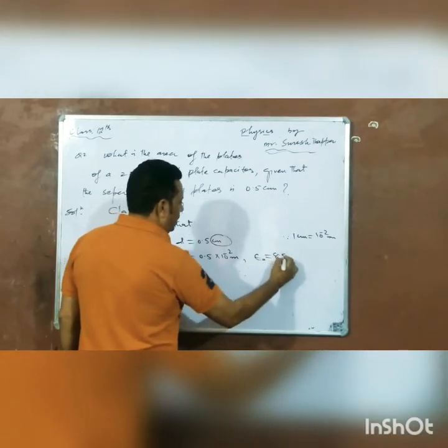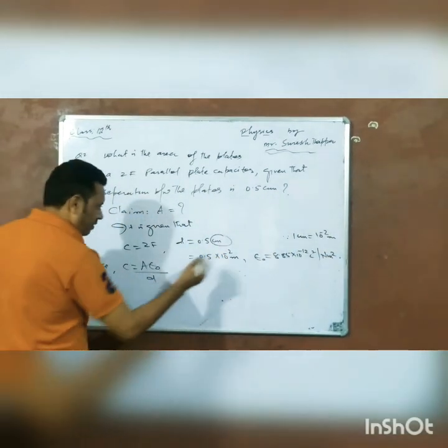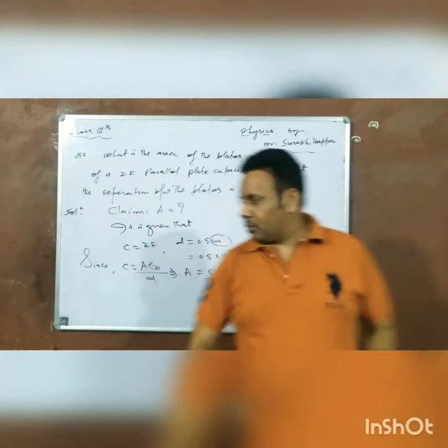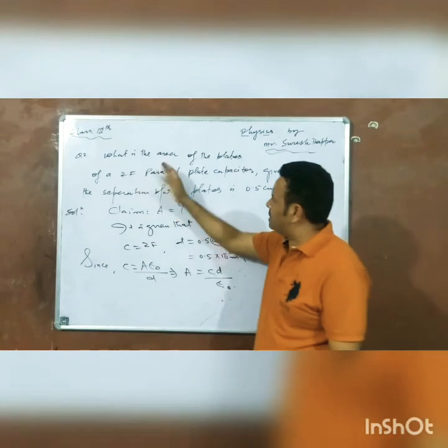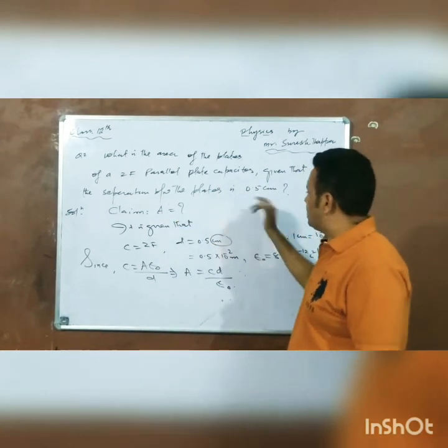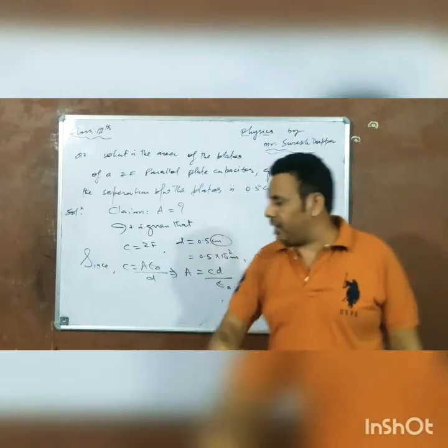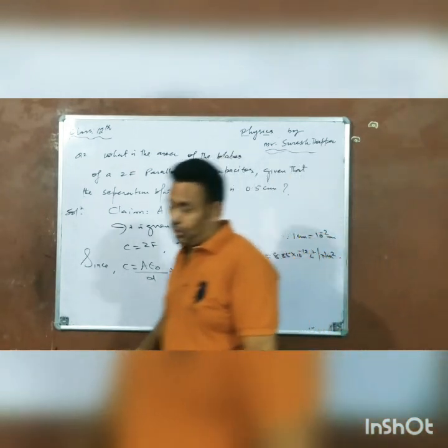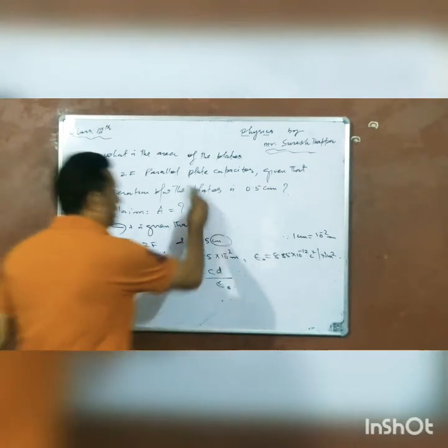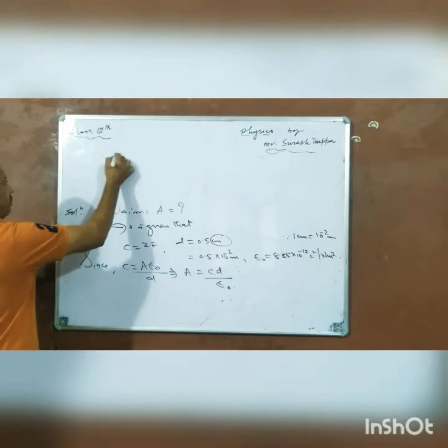The capacitance C equals epsilon naught A by D. The capacitance is 8.85 times 10 to the power minus 12 farad. The medium between the plates is air. So we need to find the area. We implement the values: area equals C times D divided by epsilon naught.